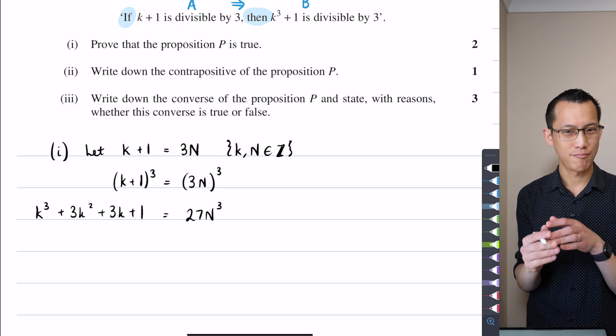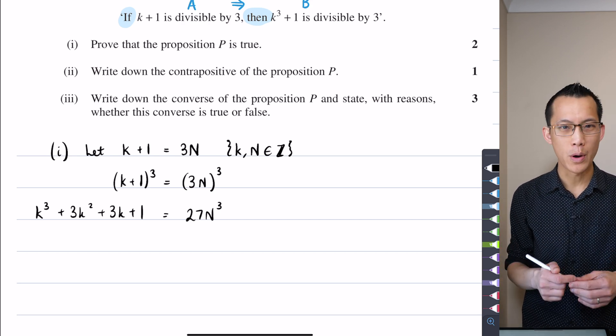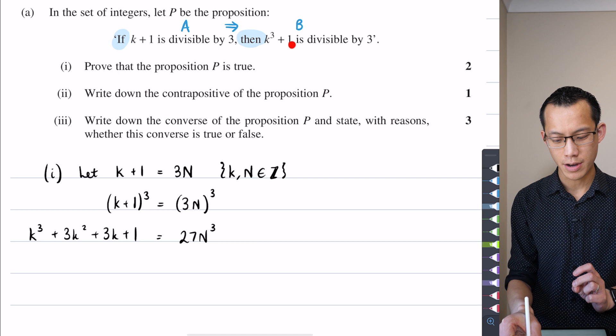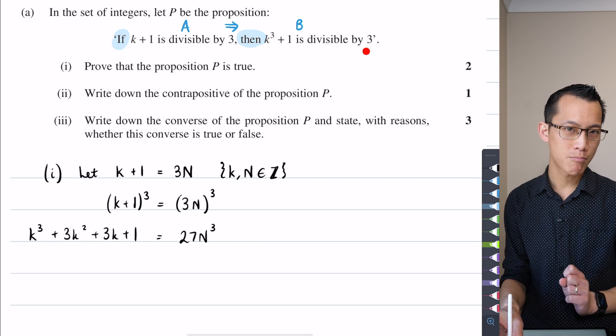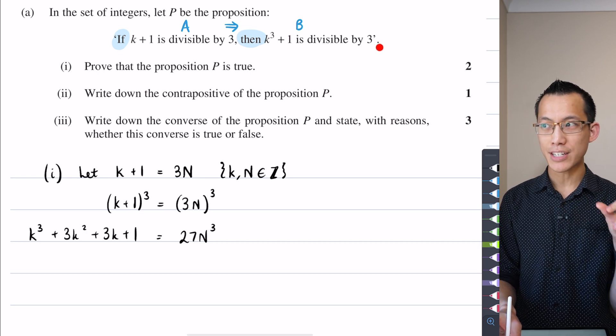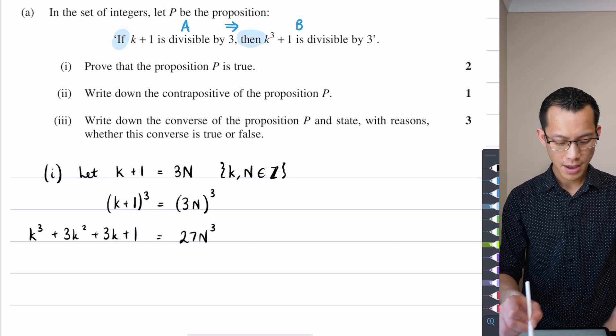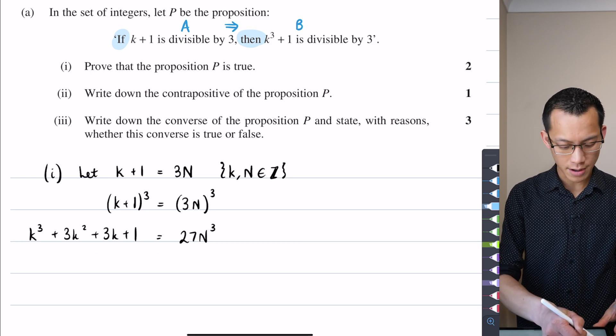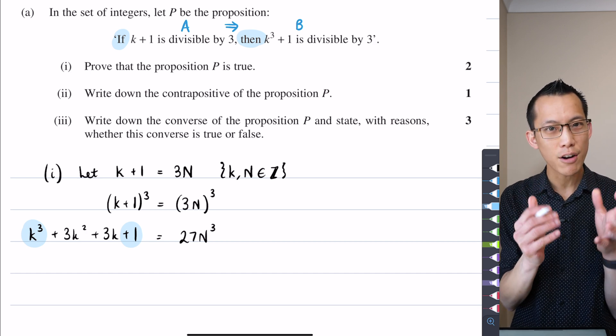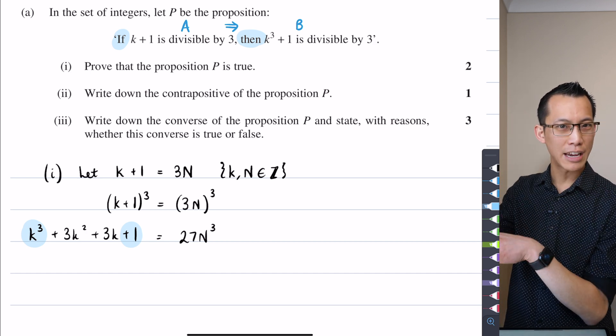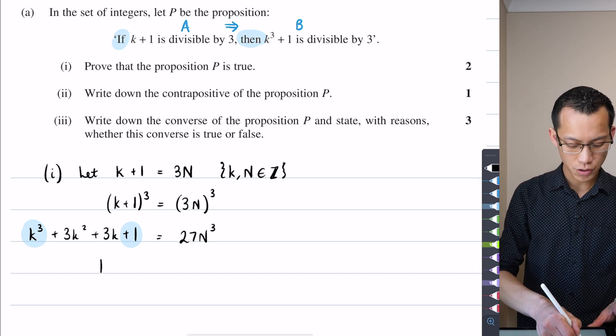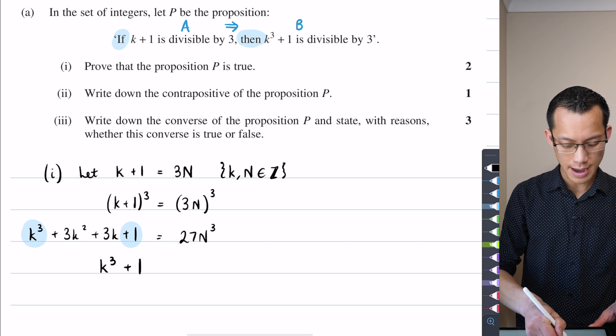I've just done some fairly simple manipulation of those two expressions. Now from here, I've just expanded. But what was the point of that? The answer is, I want to try and find this expression here, k cubed plus 1, which is part of the B half of the statement. I want to show that that thing is divisible by 3. So it also should be 3 times some stuff. And maybe you're starting to see, I can pick out this k cubed plus 1 without much effort. It's already there on the left side. And I just need to sift out, get rid of all of the other stuff.